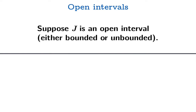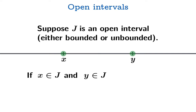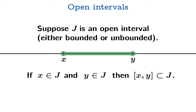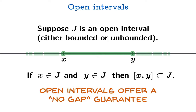Now, why do we care about open intervals? Here's a subtle property that makes them handy. Suppose j is an open interval — it could be either bounded or unbounded. We're going to look at two arguments x and y on the real number line. If x is an element of j and y is an element of j, then every number in between x and y is guaranteed also to be inside of j. Or to put it another way, the closed interval from x to y is a subset of j. What we're encountering here is what we might call a no-gap guarantee: when you take two arguments inside of an open interval, you're guaranteed that all the numbers between those numbers are also part of that same open interval.